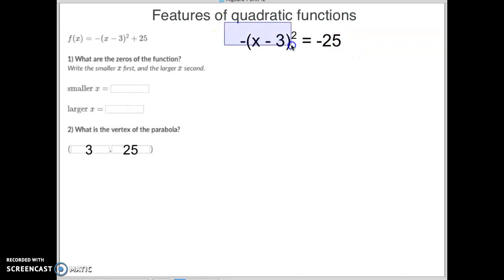Then I'm going to multiply both sides because I don't want this negative in front. So I'm going to multiply this side by a negative and I'm going to multiply this side by a negative and as I do that I get x minus 3 quantity squared equals positive 25.